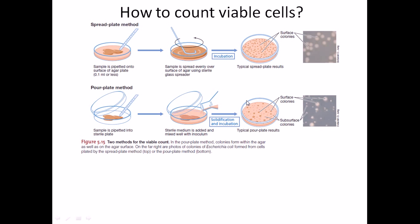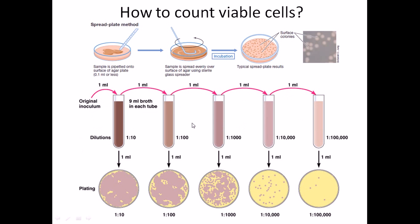viable cell is the serial dilution method, and this is said to be very foolproof method to know the number of colonies that are present in your original culture. For that method, what we use is the original inoculum.